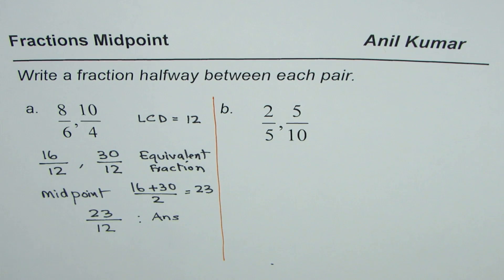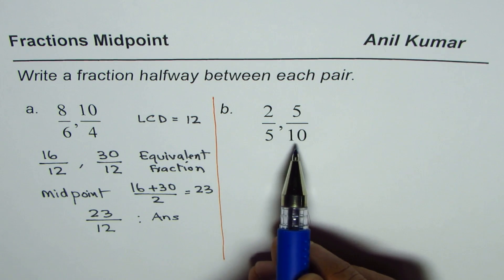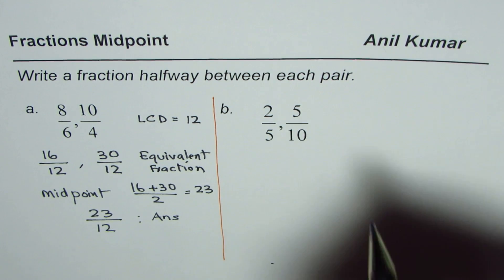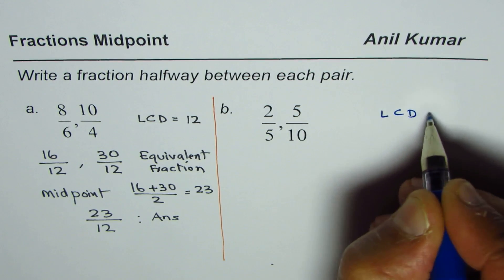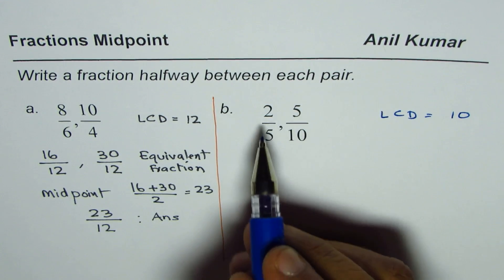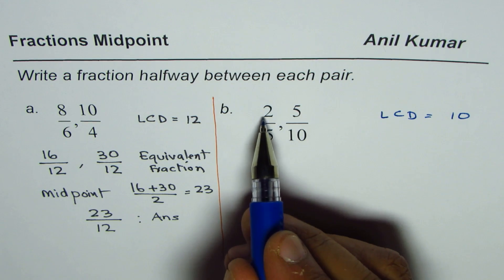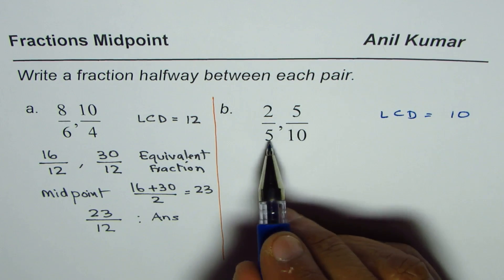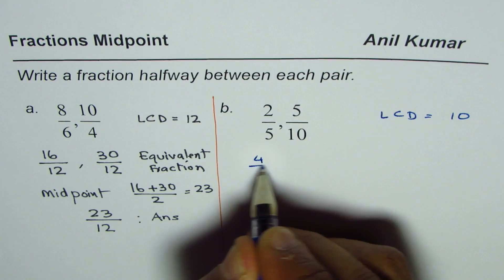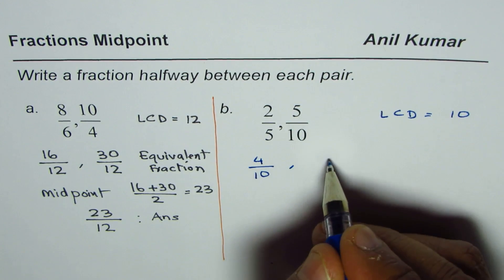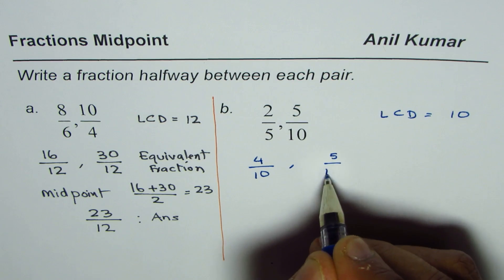Now let's find midpoint of 2 over 5 and 5 over 10. So first step is write down as equivalent fraction of the same denominator. Lowest common denominator in this case is 10. So I multiply the first fraction both numerator and denominator by 2 to get 10. So we get 4 over 10. The next one is already 5 over 10.